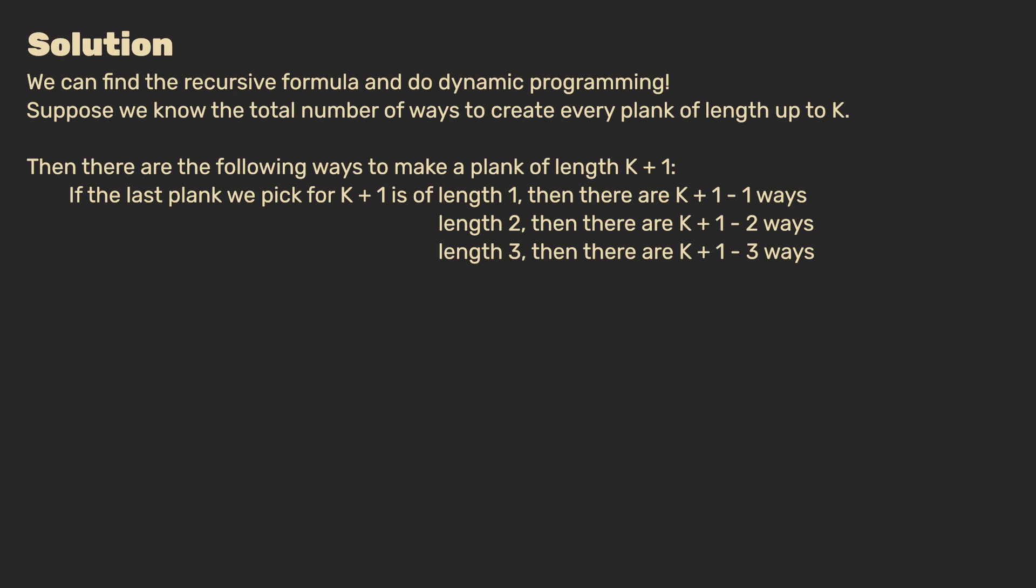If the last piece is of length 1, then we have k plus 1 minus 1 unique combinations, which all bring us to the desired length. Note that the k plus 1 minus 1 simply resolves to k. Thus, what I mean here is that to make a plank of length k plus 1 when picking a piece of length 1 at the end is simply the total number of ways that we can make a plank of length k.